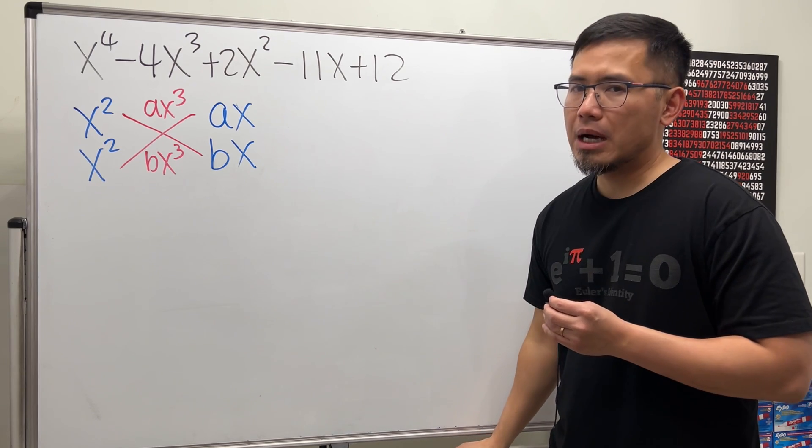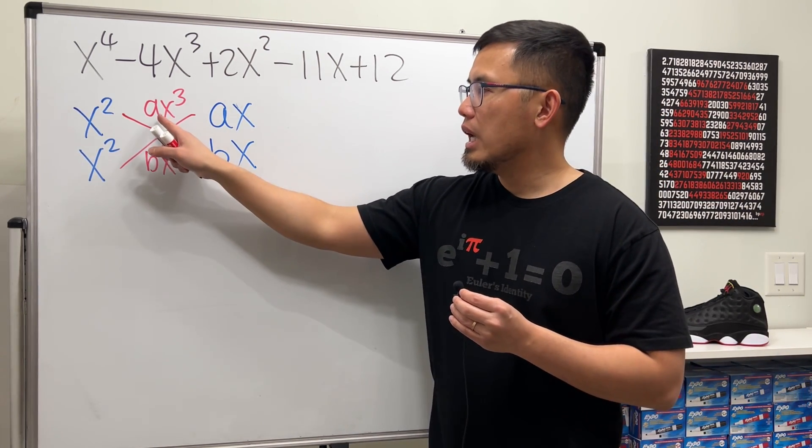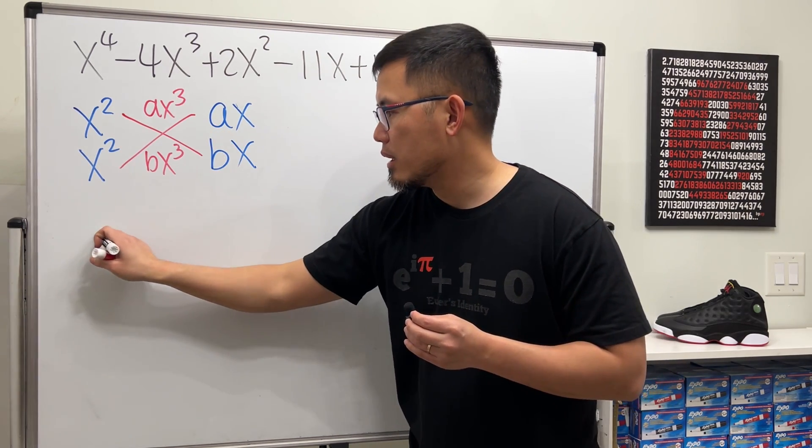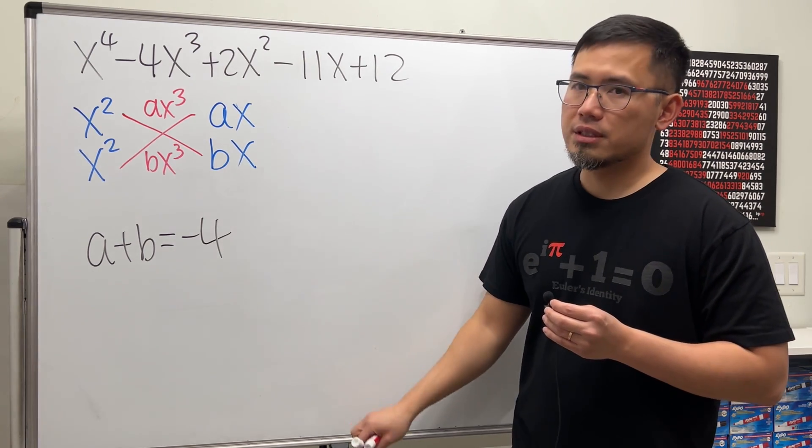So from here, we can set up our first condition. Just look at the coefficients. A plus b must be equal to negative 4. That's our first condition.